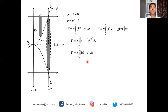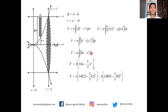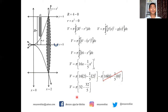Evaluating: ∫16 dx = 16x and ∫x⁴ dx = (1/5)x⁵, with limits from 0 to 2. At x = 2: 16(2) − (1/5)(32) = 32 − 32/5. Simplifying: V = π(32 − 32/5) = 128π/5 cubic units.